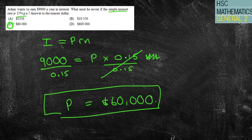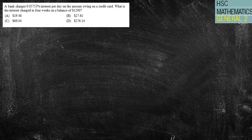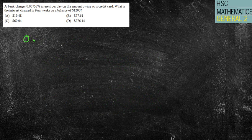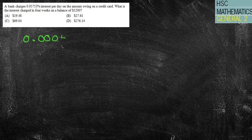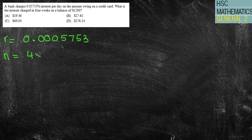Okay, question three. A bank charges 0.0—well, I'm going to straight away write double zero and then put my 05753. That's because that's my interest rate as a decimal, not as a percentage, per day on the amount owing on a credit card. What is the bank—so the interest charged in four weeks? Well my n is four lots of seven because it's four weeks, so n equals 28 days.